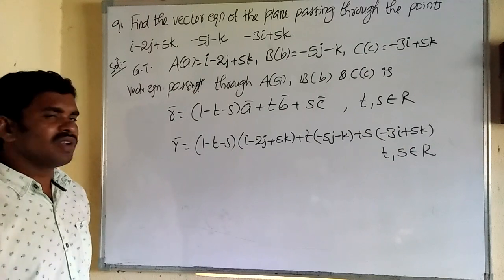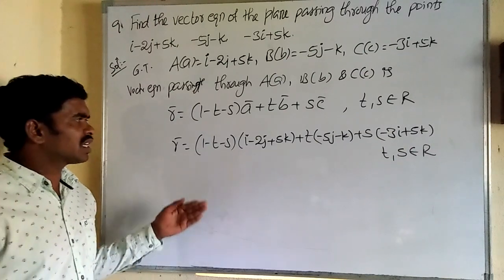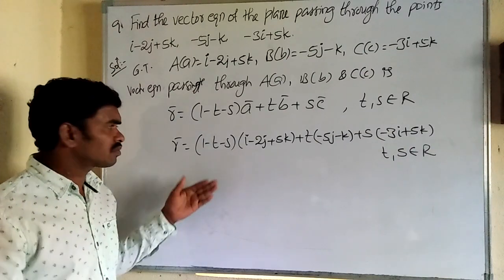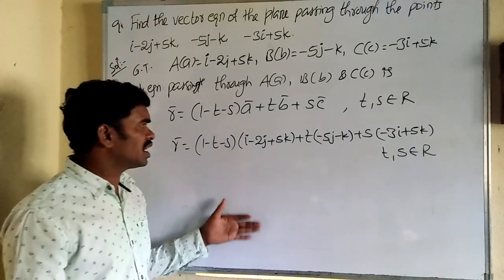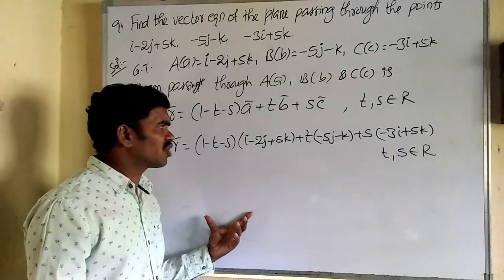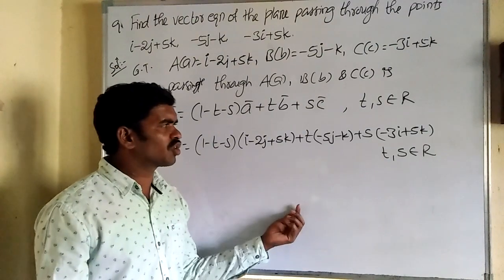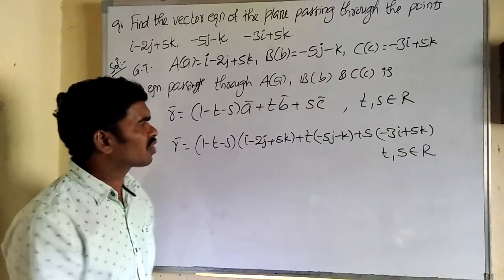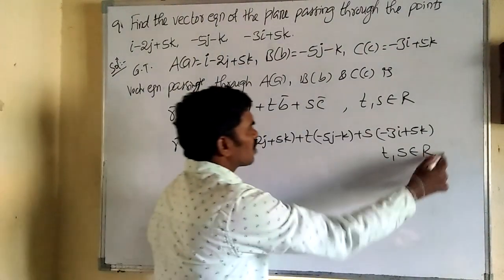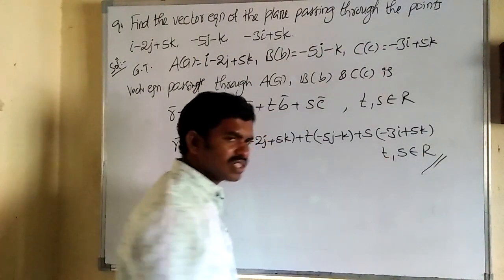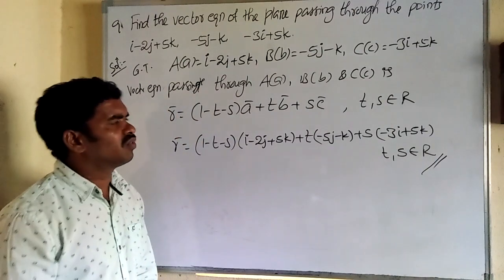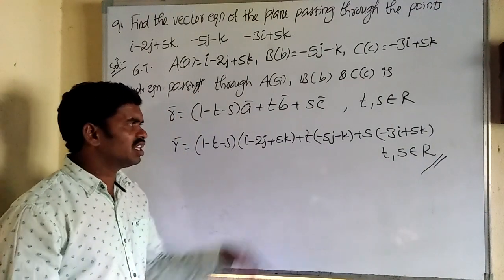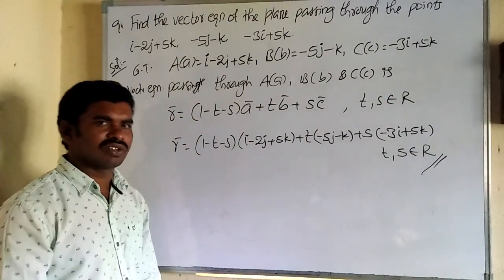If you have more interest, you can expand and find the i, j, k coefficients separately. Writing up to the substitution step is enough for full 2 marks.